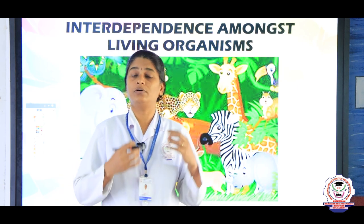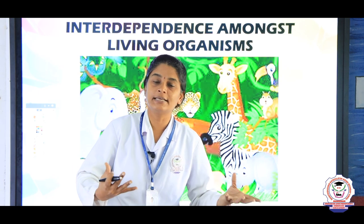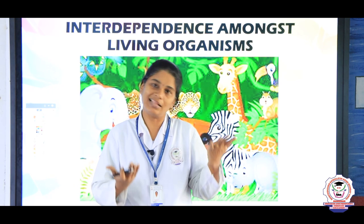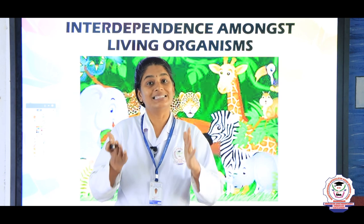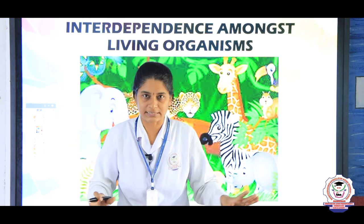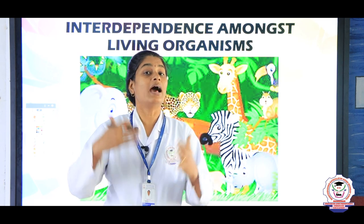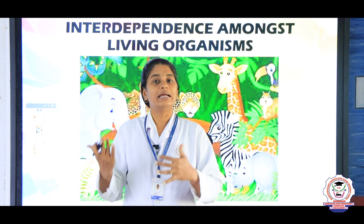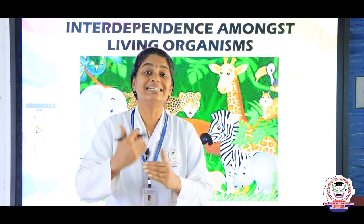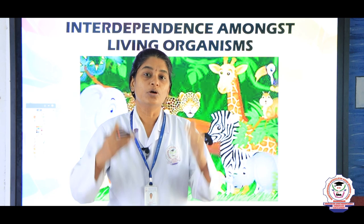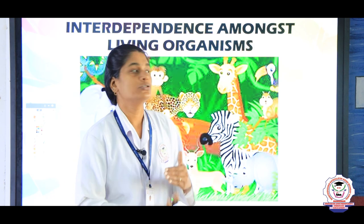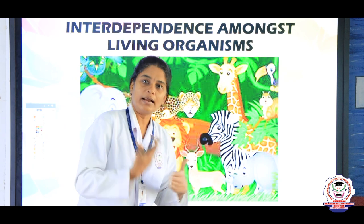In a forest, if the number of lions increases, all the lions will eat the deer and thereby there will not be any other animals left in the forest. Similarly, if more deer are present, all the deer will eat all the grass and there will not be any grass left for other animals. That is why living organisms must exist in certain proportions so they can also let other organisms survive.